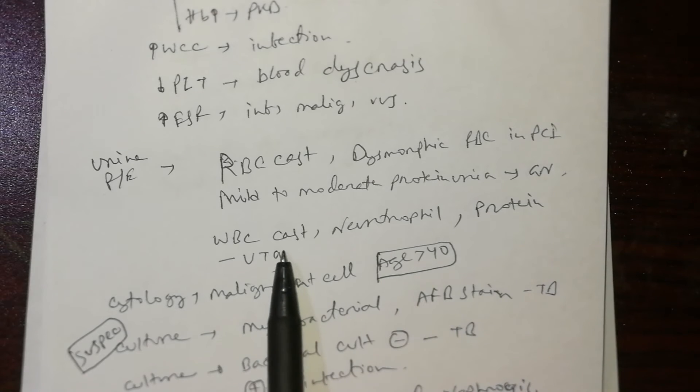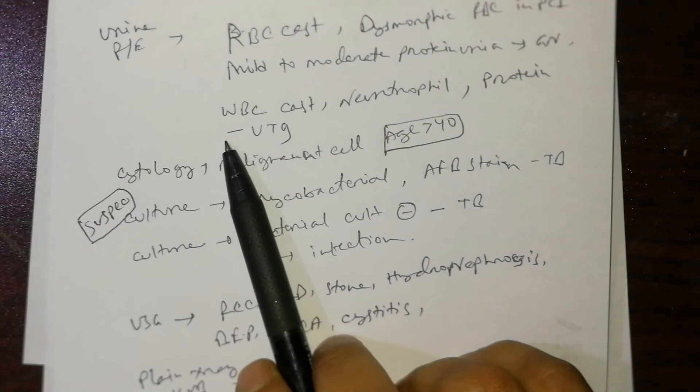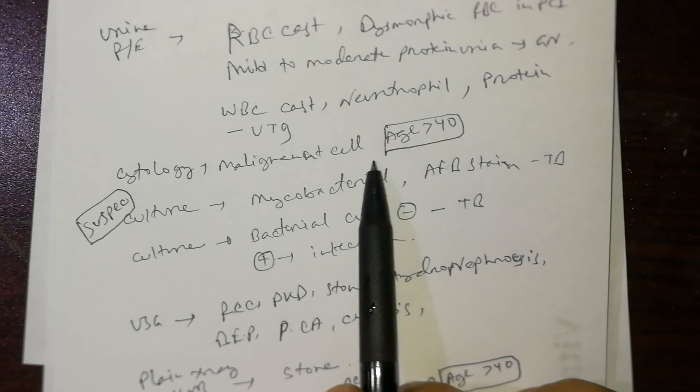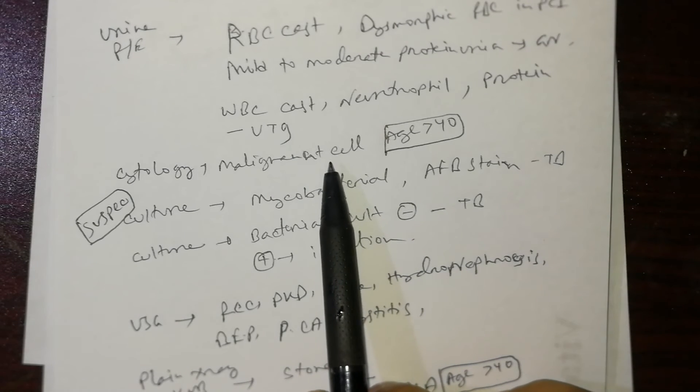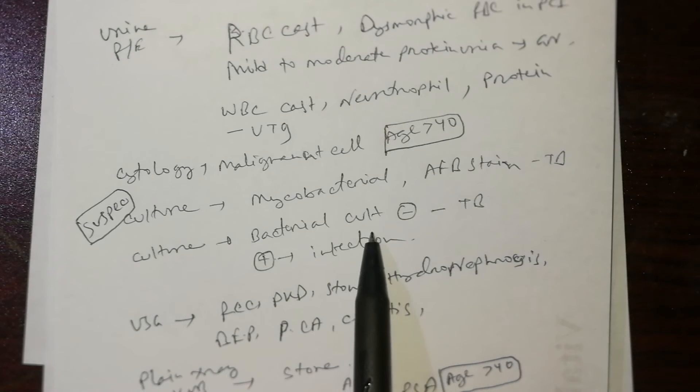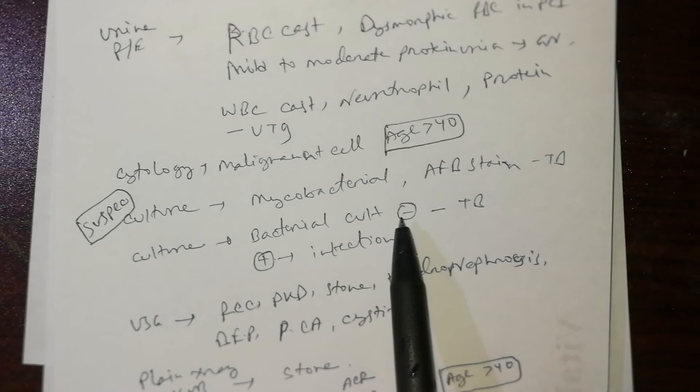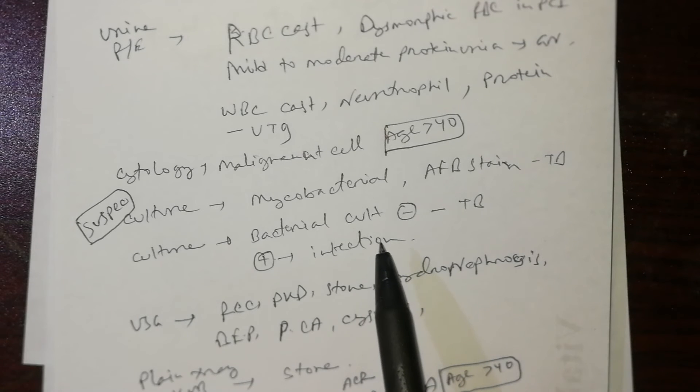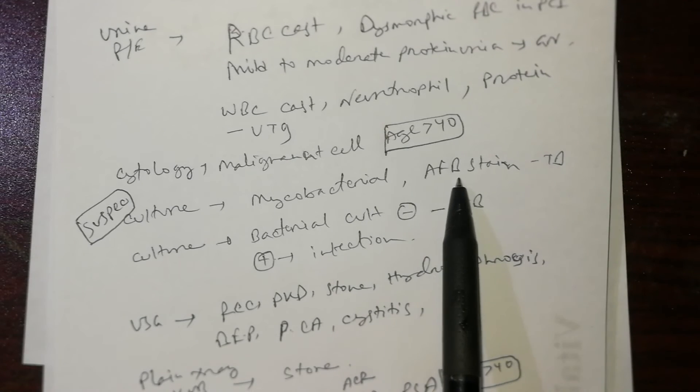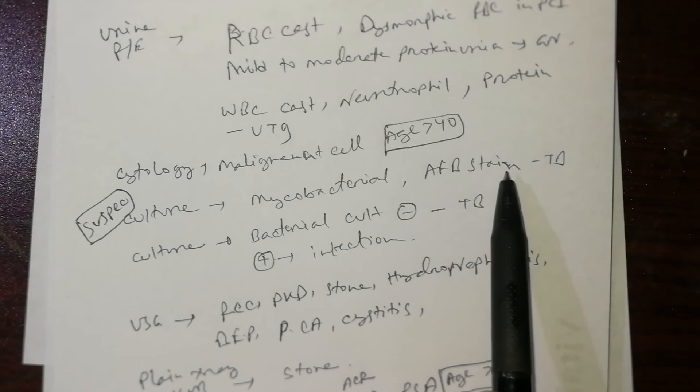When RBCs are associated with WBC casts or neutrophils and protein, this is due to UTI. Do urine cytology, especially if age is more than 40 and diagnosis is uncertain, to find malignant cells, particularly for bladder carcinoma. Urine culture: if positive, treat according to infection. If negative but RBCs and pus cells are present with some protein but culture is negative, send for mycobacterial culture in Lowenstein-Jensen media and AFB stain in three consecutive early morning urine samples.